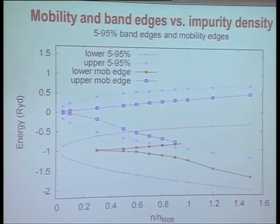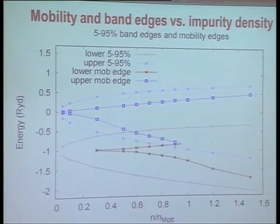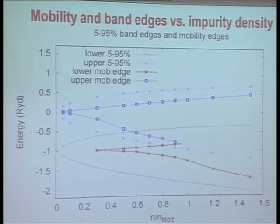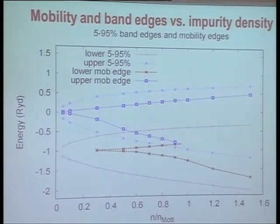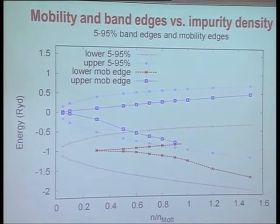It says very clearly that around the Mott density, the whole center of the two-band manifold is all conducting, and therefore clearly it's metallic there. But it's not the crossing of the two mobility edges that determines the metal-insulator transition density — it's when the Fermi level crosses the mobility edge. The Fermi level is sitting in between the upper band and the lower band. What we find from this calculation is that the random system ought to have gotten metallic much, much earlier.